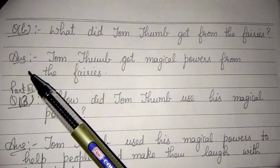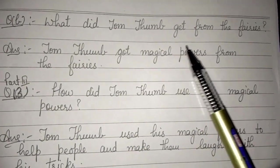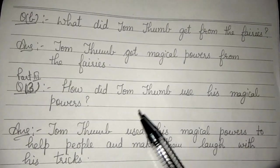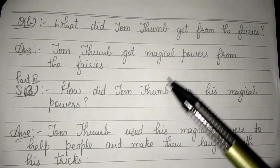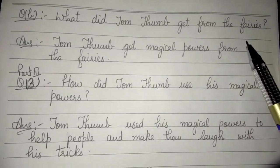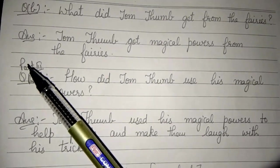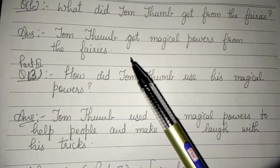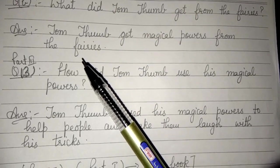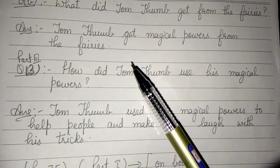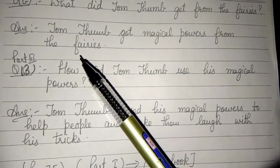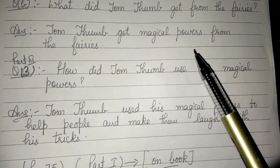Question number 2: What did Tom Thumb get from the fairies? Tom Thumb को fairies से क्या मिला था? कौन सी चीज़ ऐसी थी जो fairies Tom Thumb को दे कर गई थी? Fairies यानी परियाँ। Tom Thumb got magical powers from the fairies. Tom Thumb को fairies जादूई शक्तियाँ दे कर गई थी।